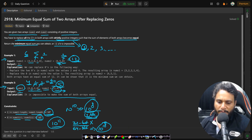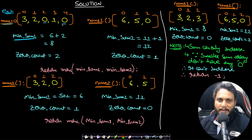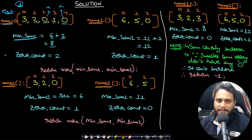Let's look at the key observation using Example 1. For nums1 = [3, 2, 0, 1, 0], the sum cannot decrease — it can only increase when replacing zeros, since you must use a strictly positive number. The minimum strictly positive number is 1. So the minimum possible sum is 3+2+1+1+1 = 8, with a zero count of 2. For nums2 = [6, 5, 0], the minimum sum is 6+5+1 = 12, with a zero count of 1.